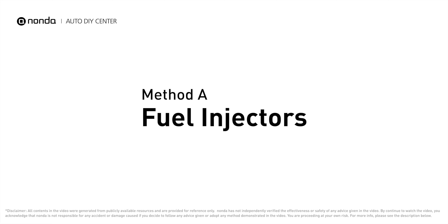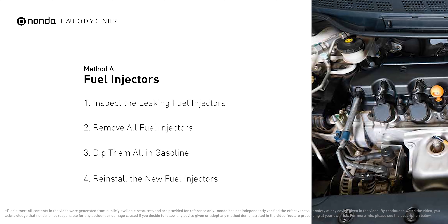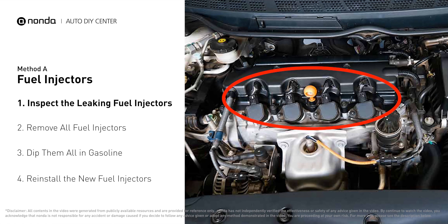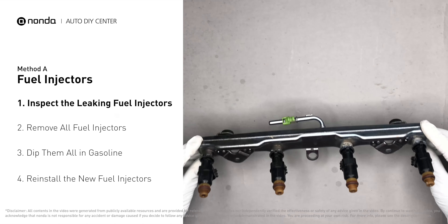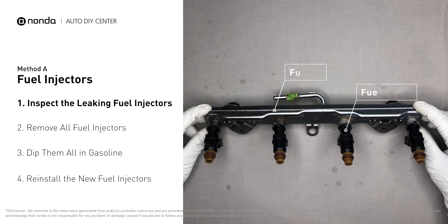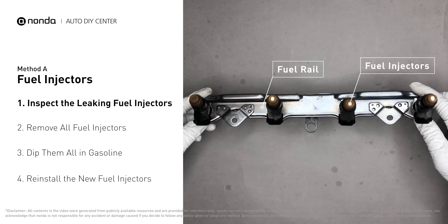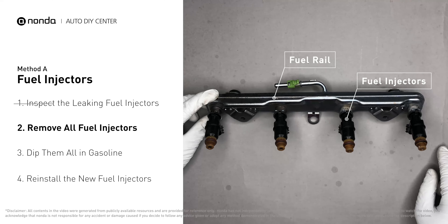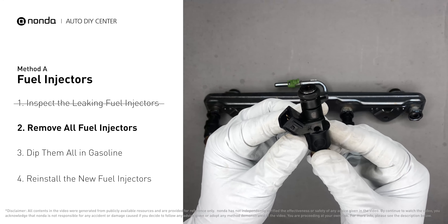Method A: Fuel Injectors. The fuel injectors are mounted in the intake manifold so that they spray fuel directly at the intake valves. Inspect the leaking fuel injectors on the fuel rail. Carefully remove the fuel injector.